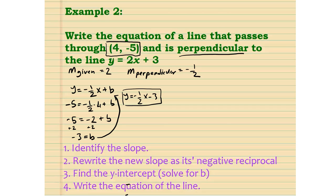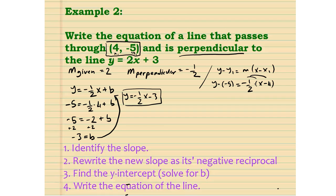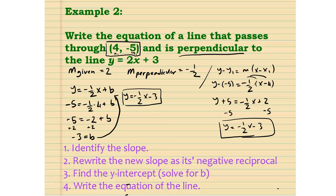Now let's do the same process using point-slope form. Our point-slope equation is y minus y1 equals m times x minus x1. Plugging in the point and slope of negative one half: y minus negative 5 equals negative one half times x minus 4. Applying the distributive property: y plus 5 equals negative one half x plus 2. Subtract 5 from each side: y equals negative one half x minus 3. In either case, we find the equation of the perpendicular line.